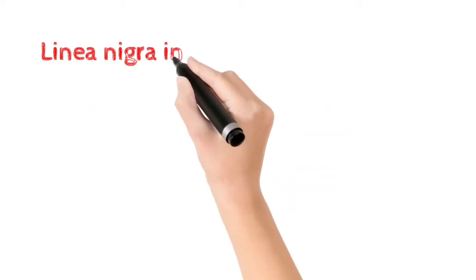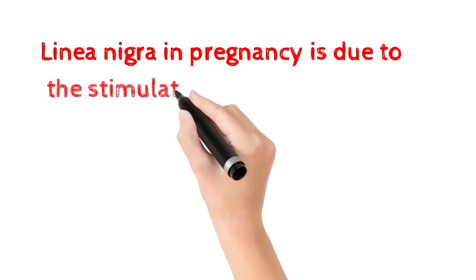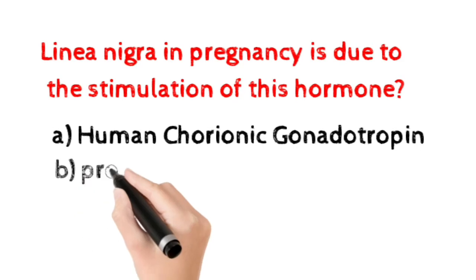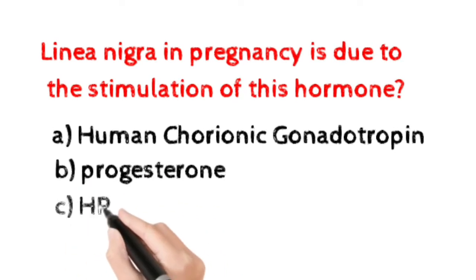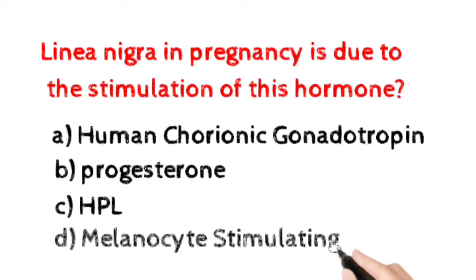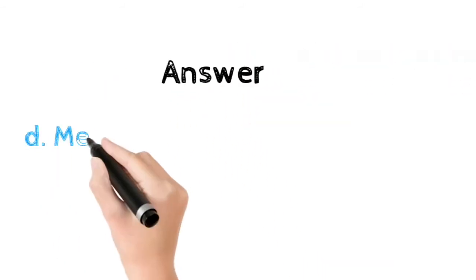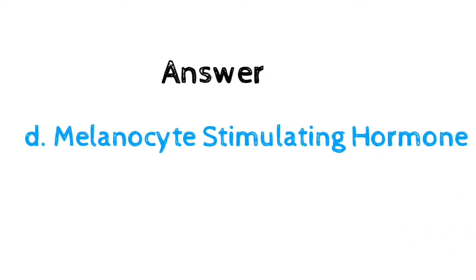Number one: Linea nigra in pregnancy is due to the stimulation of this hormone. Option A: human chorionic gonadotrophin. Option B: progesterone. Option C: human placental lactogen. Option D: melanocyte stimulating hormone. Here the correct answer is melanocyte stimulating hormone.